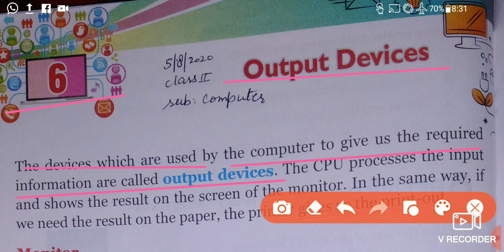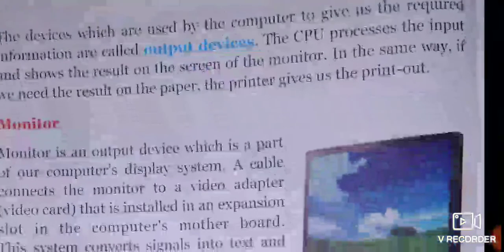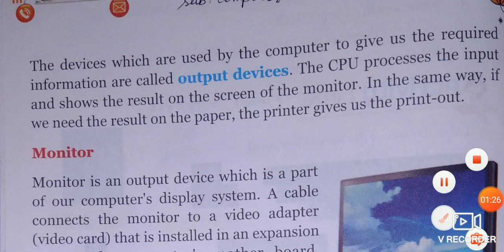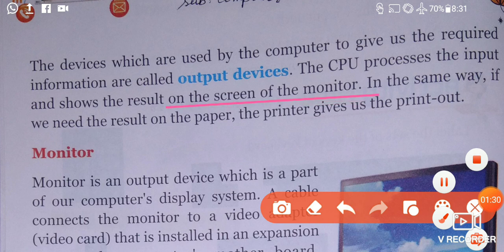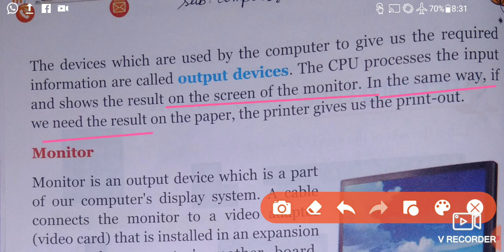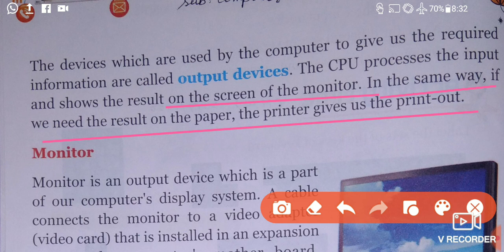The CPU processes the input and shows the result on the screen of the monitor. If we need the result on paper, the printer gives us the printout. So the printer and monitor are output devices because both provide output.